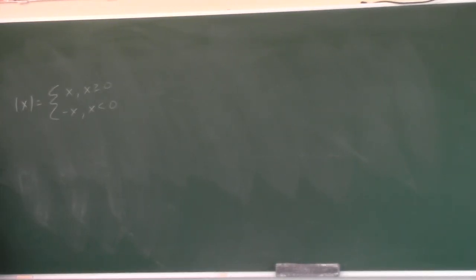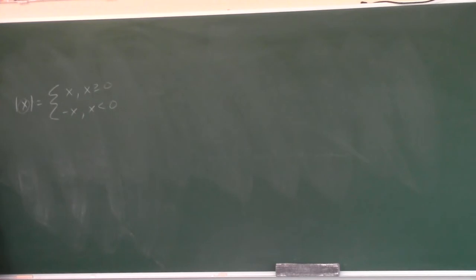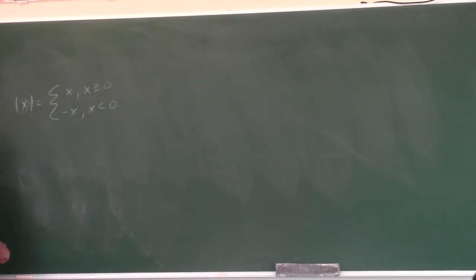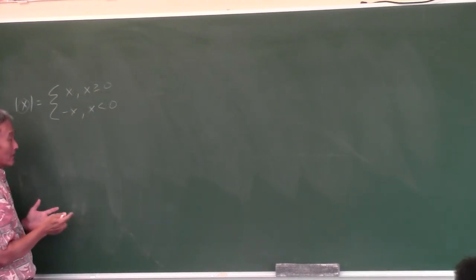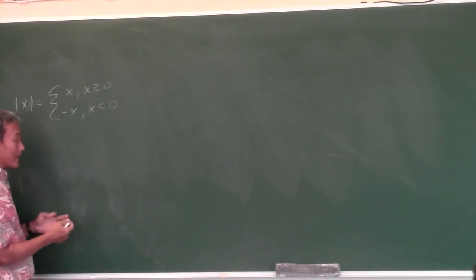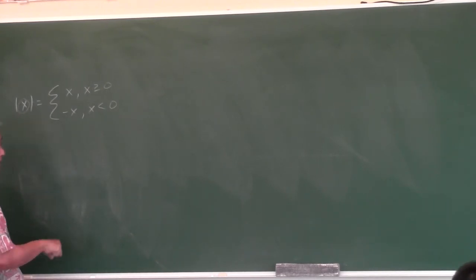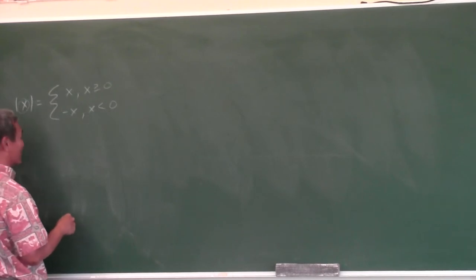You know how absolute value works? If the inside of the absolute value is positive, you leave it alone — you don't touch it, it just stays x. However, if the inside is negative, you have to negate it — multiply it by negative one. If the inside is positive, you leave it alone. If the inside is negative, you negate it.